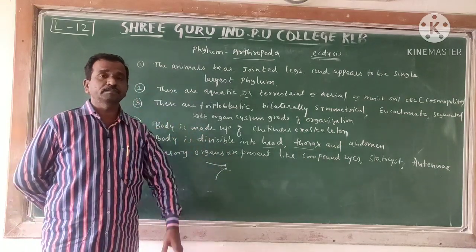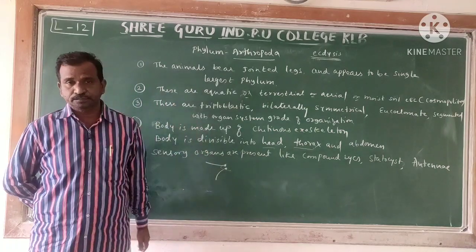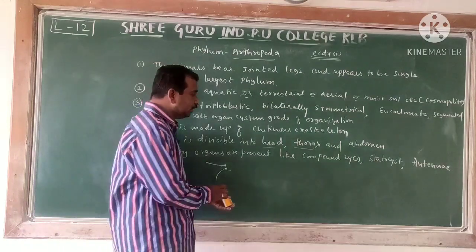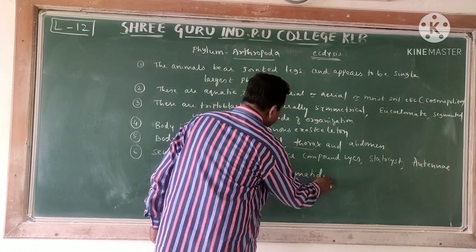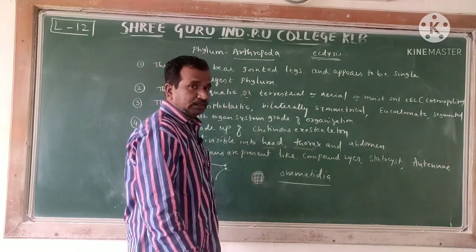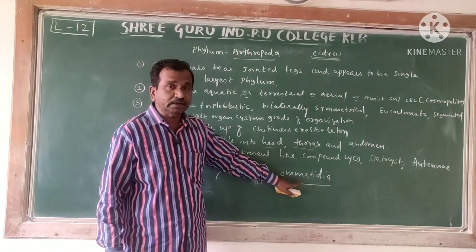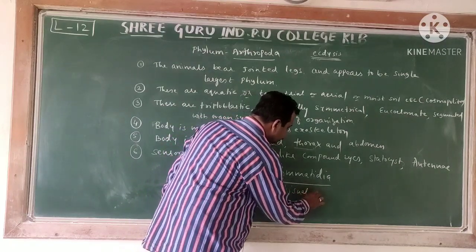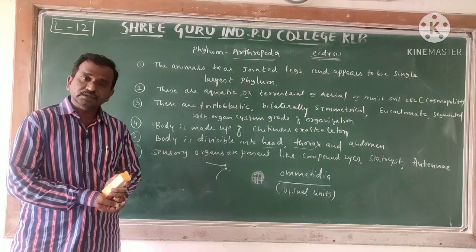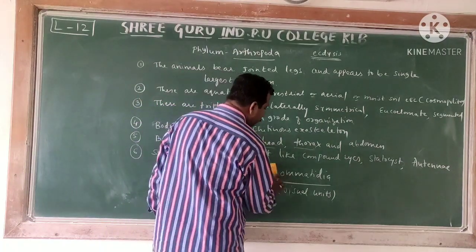Compound eyes are made up of several visual units — around 2000 visual units — called ommatidia. These are mainly meant for sensory purpose rather than visual purpose. Visual units called ommatidia are present in insects and crustaceans such as prawns.